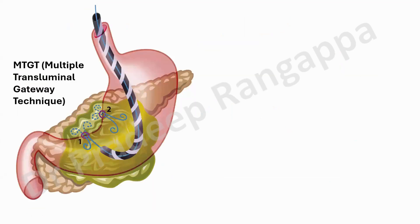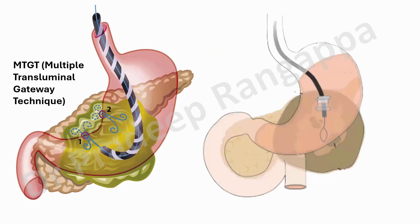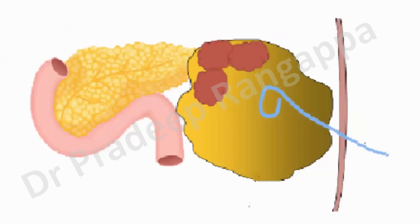These pictures reflect what the multiple transluminal gateway technique involves. We won't dwell into details as it is not our area of expertise. This image shows endoscopic ultrasound-guided drainage for necrosectomy. Interventional radiologists typically perform percutaneous drainage, or it could be video-assisted drainage or sinus tract endoscopy — these are some of the techniques used when endoscopic intervention is not feasible.